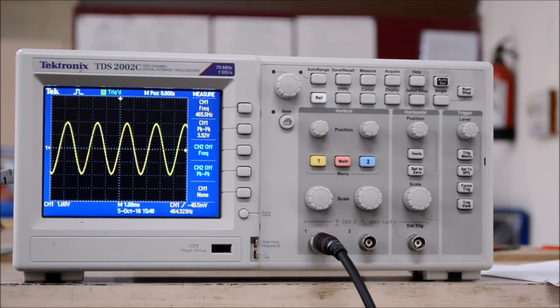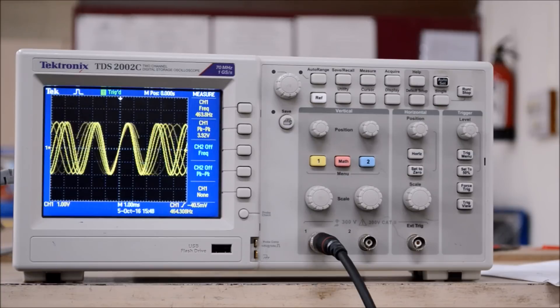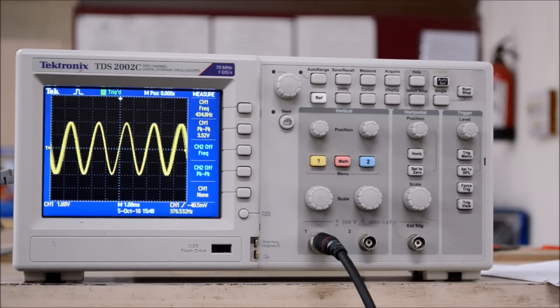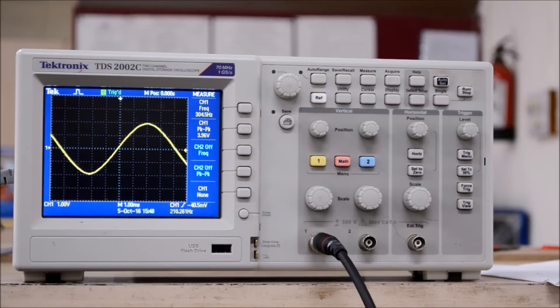Now, this is the waveform observed by the function generator. I am reducing the frequency to its minimum and obtain the minimum frequency possible by the kit.